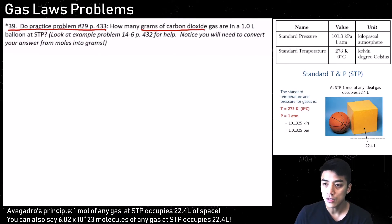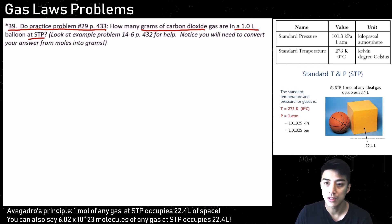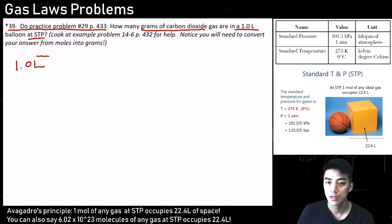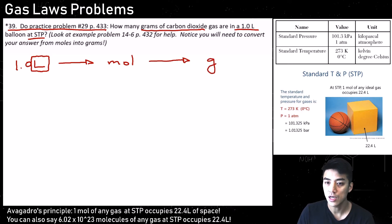Next problem: how many grams of CO2 gas are in a 1-liter balloon at STP? Let's map out a plan — it's going to involve some unit conversions, some old and some new. We start with 1 liter, and we'll go from liters to moles, then moles to grams. This will take two steps.